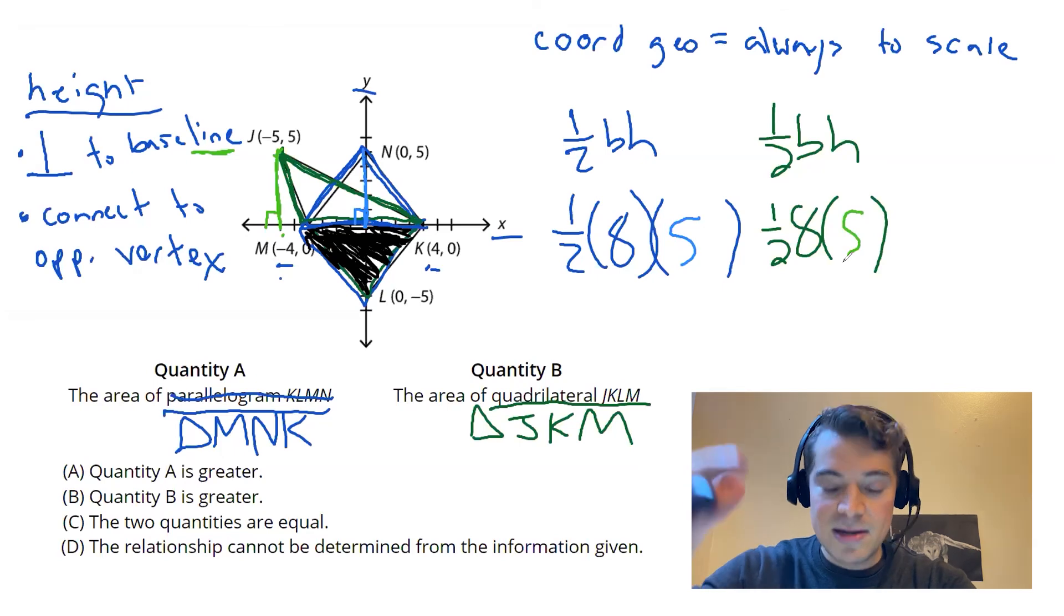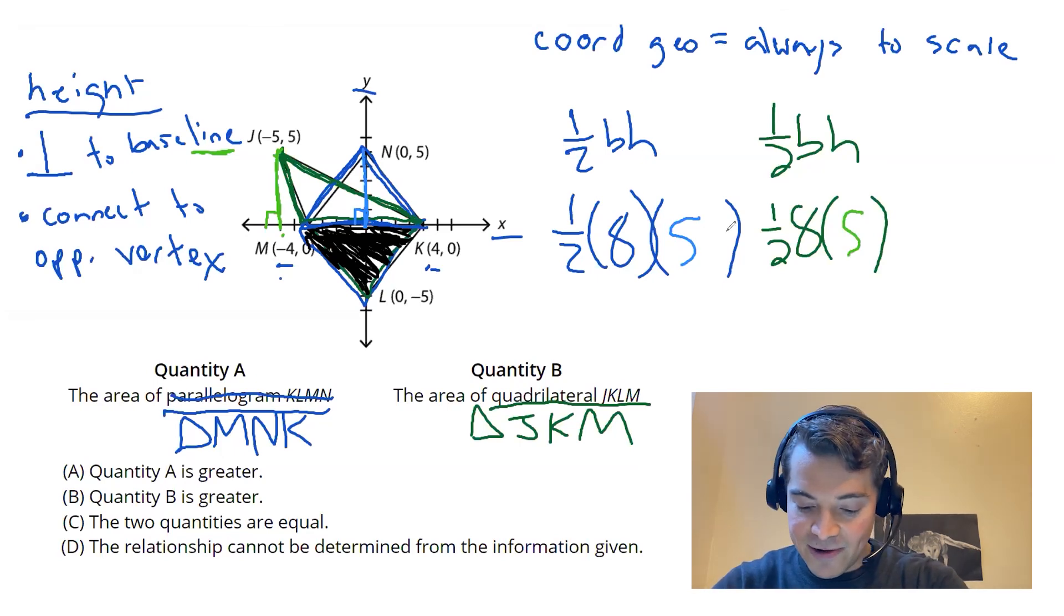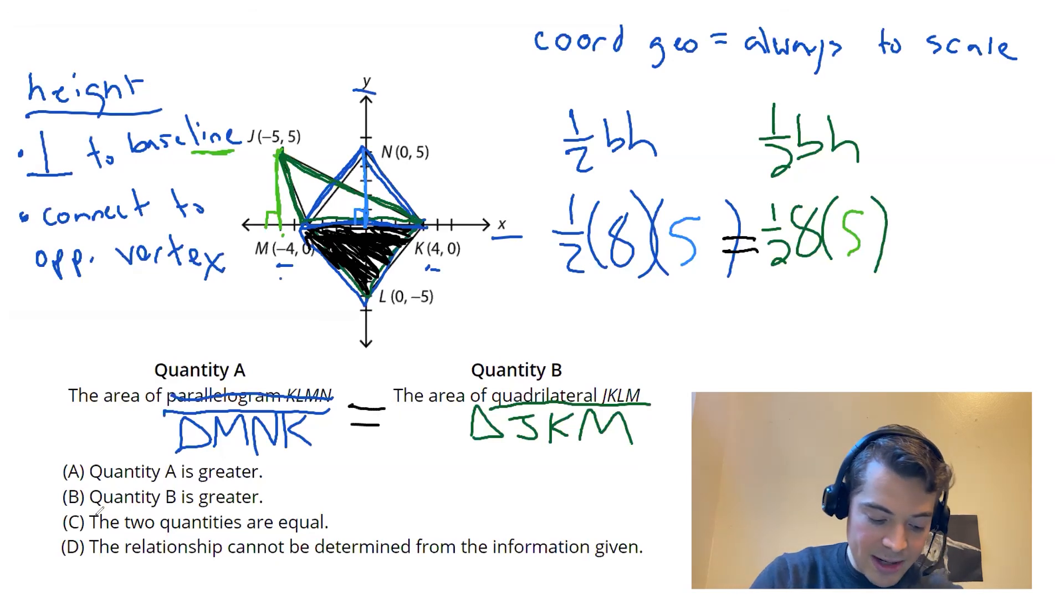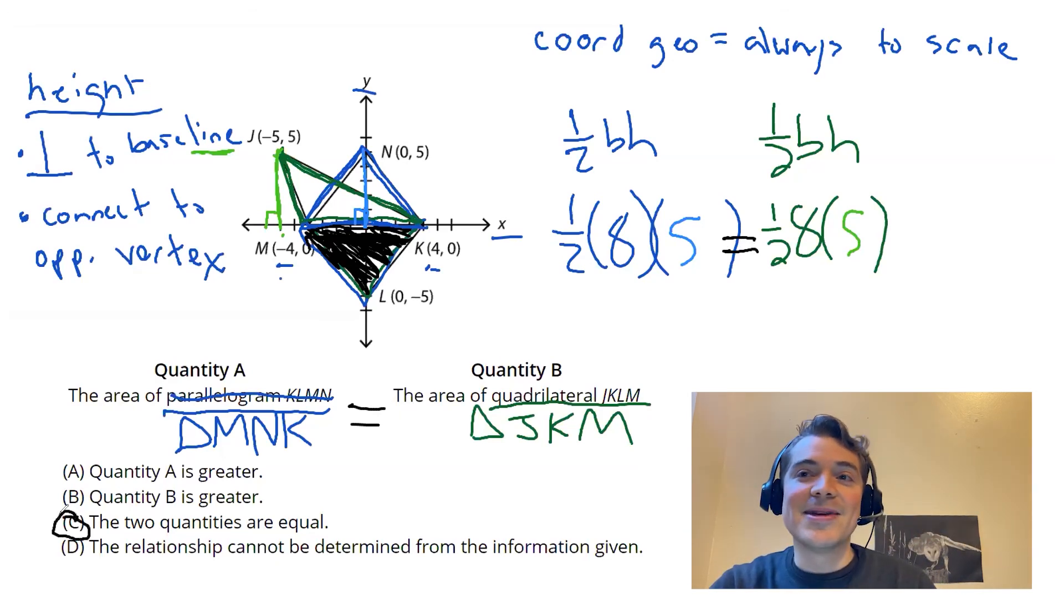And at this point you can see, one half 8 times 5, one half 8 times 5, those two calculations are going to be equal. So my two quantities are equal and my answer is going to be C.